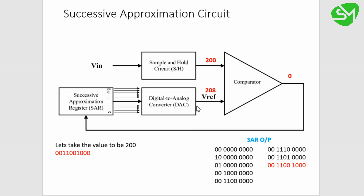Now 224 is greater than 200, so the comparator output is 0. The SAR replaces that 1 with 0 and moves the 1 right by one bit, giving 0011001000, which is 208. Again 208 is greater than 200, so the comparator output is 0 again. The 1 is replaced by 0 and shifted right, and the SAR output becomes 0011001000, which is exactly 200.